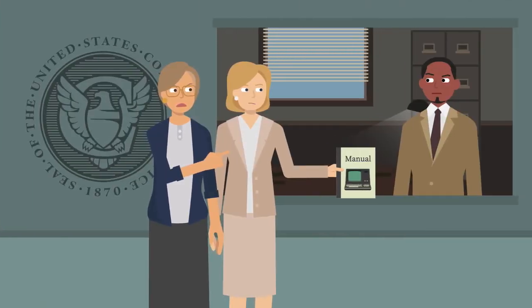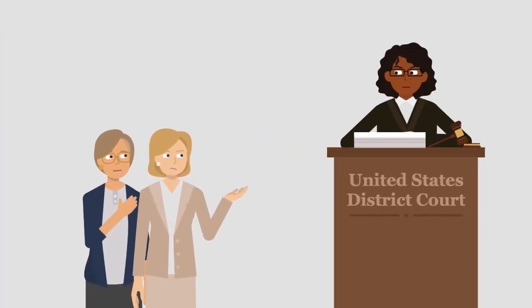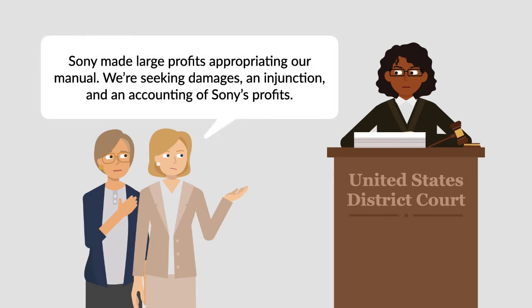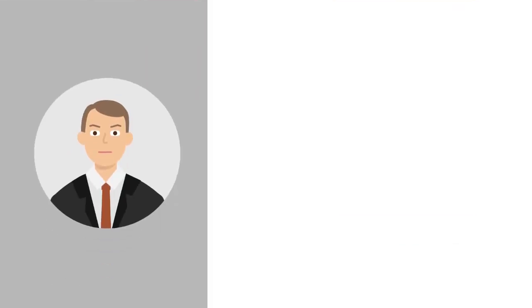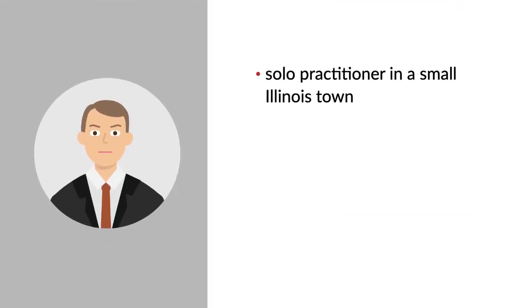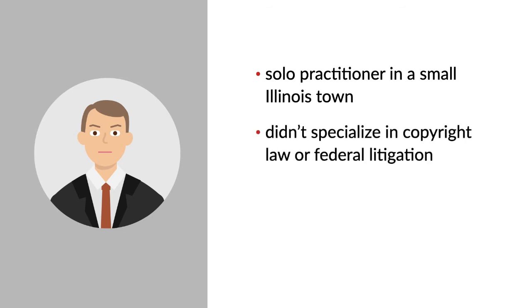In 1985, Hayes and McDonald registered their original manual with the United States Copyright Office. They then sued Sony in federal court, alleging violations of common law and statutory copyright. They claimed that Sony made large profits by appropriating their manual, and they sought relief including money damages, an injunction, and an accounting of Sony's profits. Hayes and McDonald's lawyer was Emmanuel Guion, a solo practitioner in a small Illinois town who didn't specialize in copyright law or federal litigation.